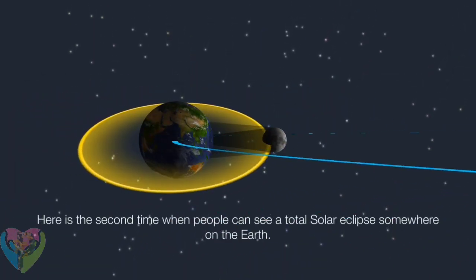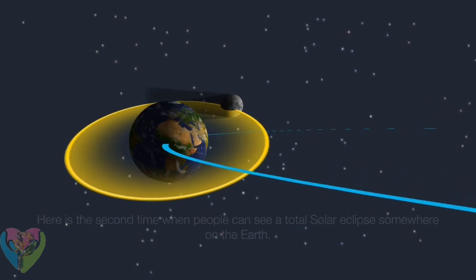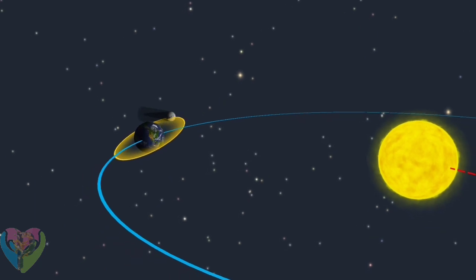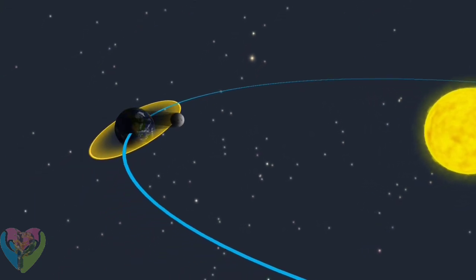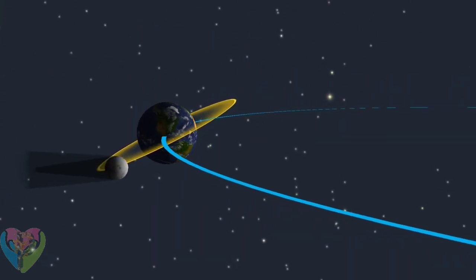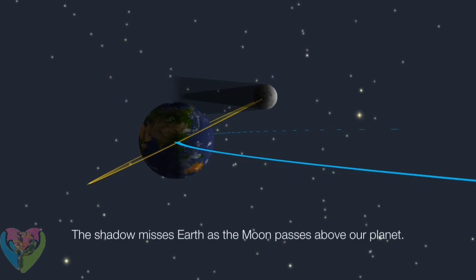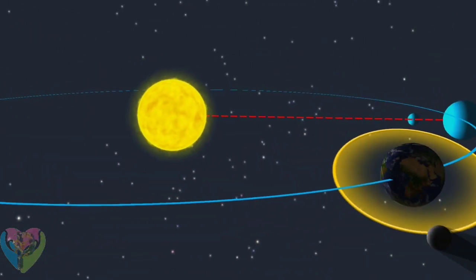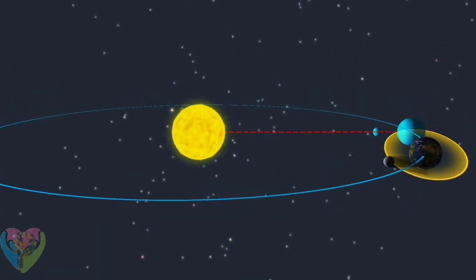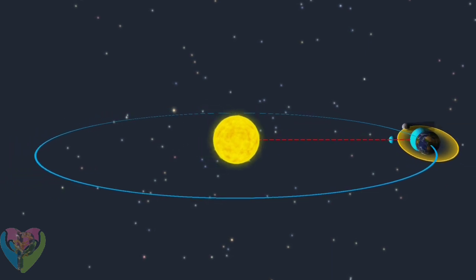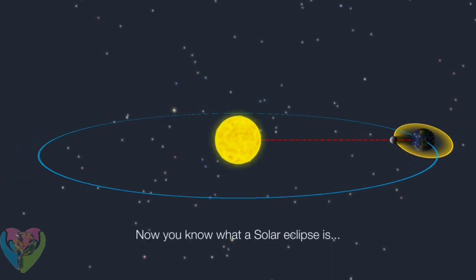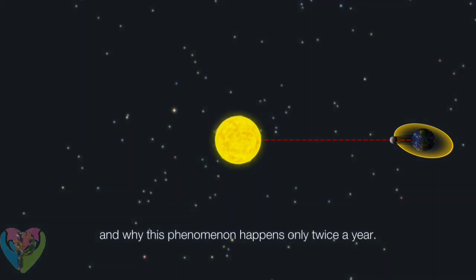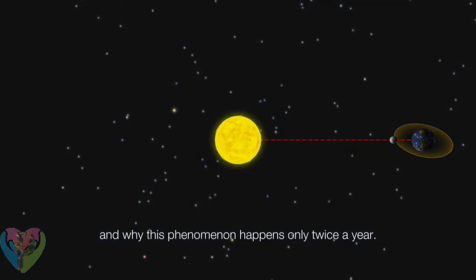Here's the second time when people see a total solar eclipse somewhere on earth. The shadow misses the earth as the moon passes above our planet. Now you know what a solar eclipse is, and why this phenomenon only happens twice per year.